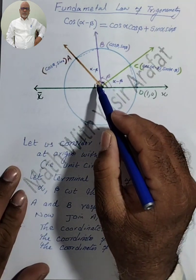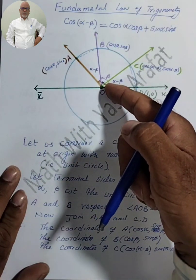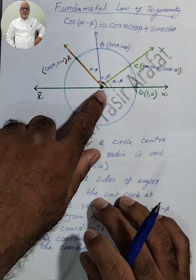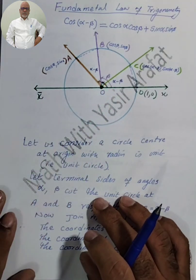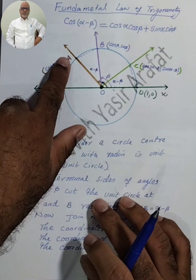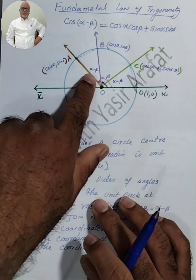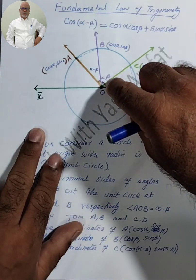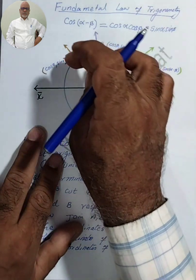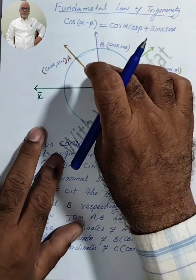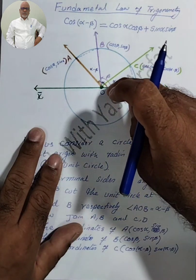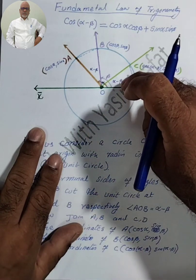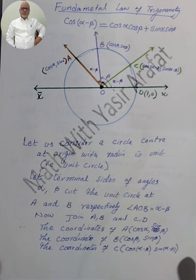The angle with terminal arm A is α and with terminal arm B is β. So the angle AOB is α minus β. This is the whole α and this is the whole β, so when we subtract α minus β, this gives angle AOB. Similarly, angle COD will also be α minus β.